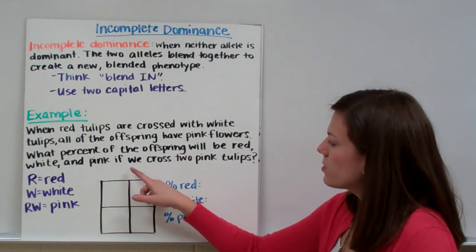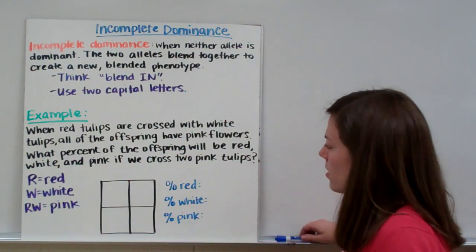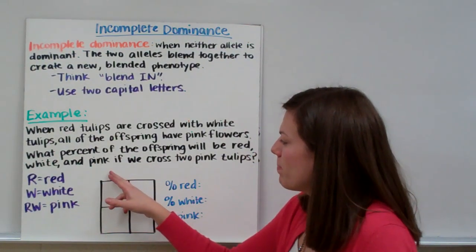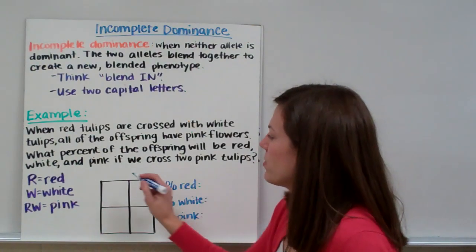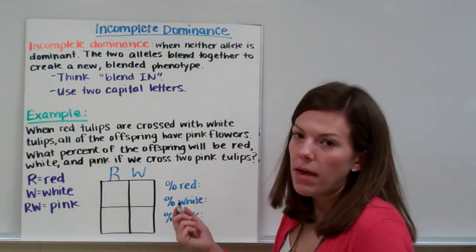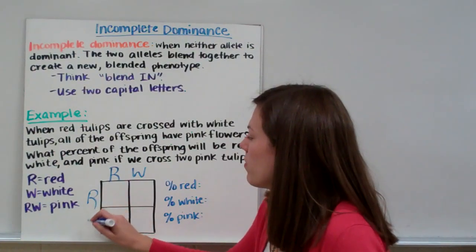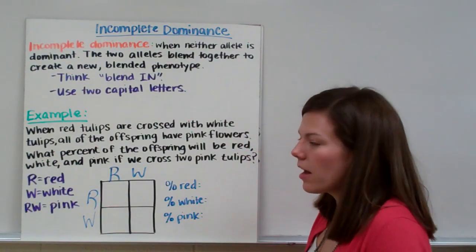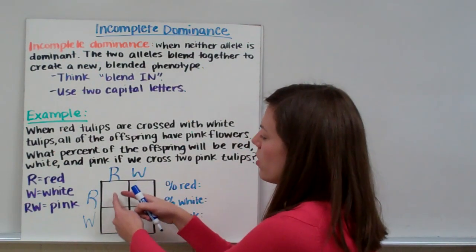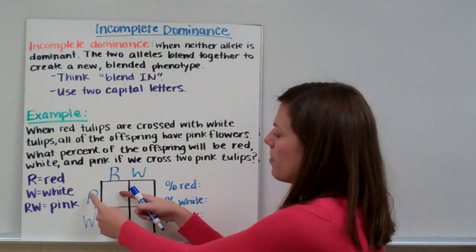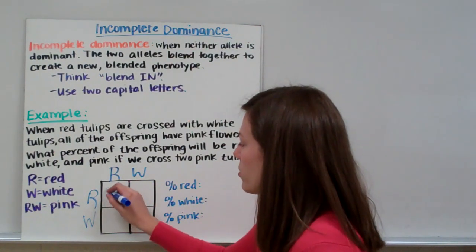Our problem says we're going to cross two pink tulips, so we need to put our pink alleles on the sides. We have R, W for the pink male and R, W for the pink female. Just like our other Punnett squares, we take the letter on the top and the letter on the side to fill in our square.